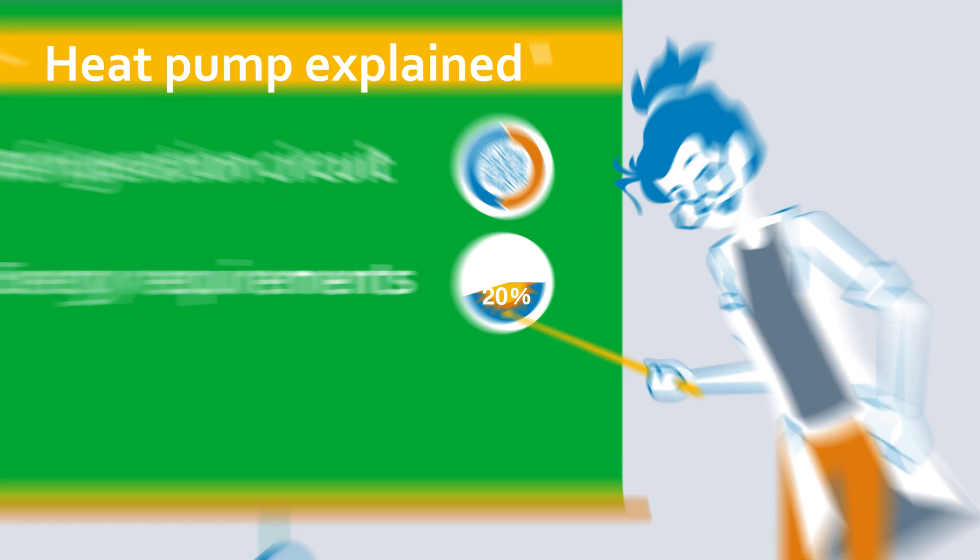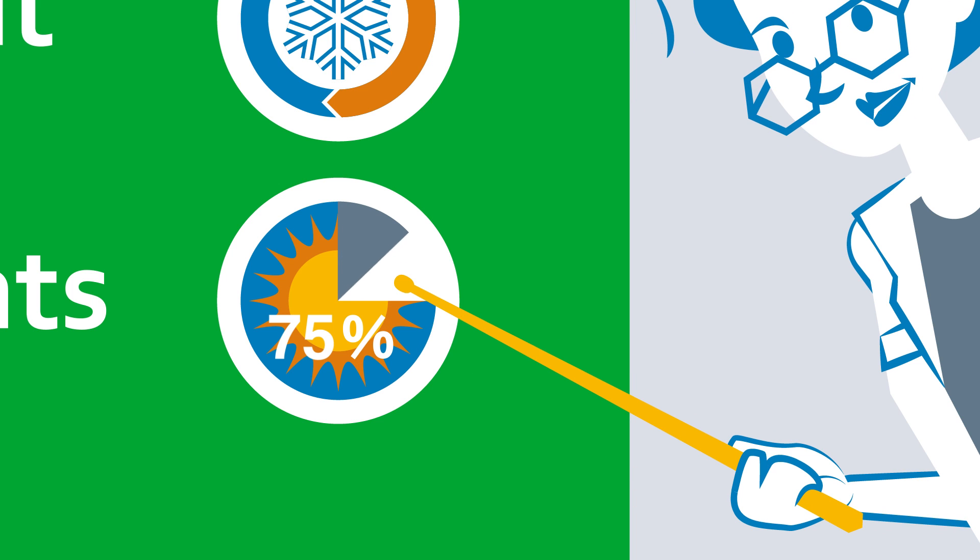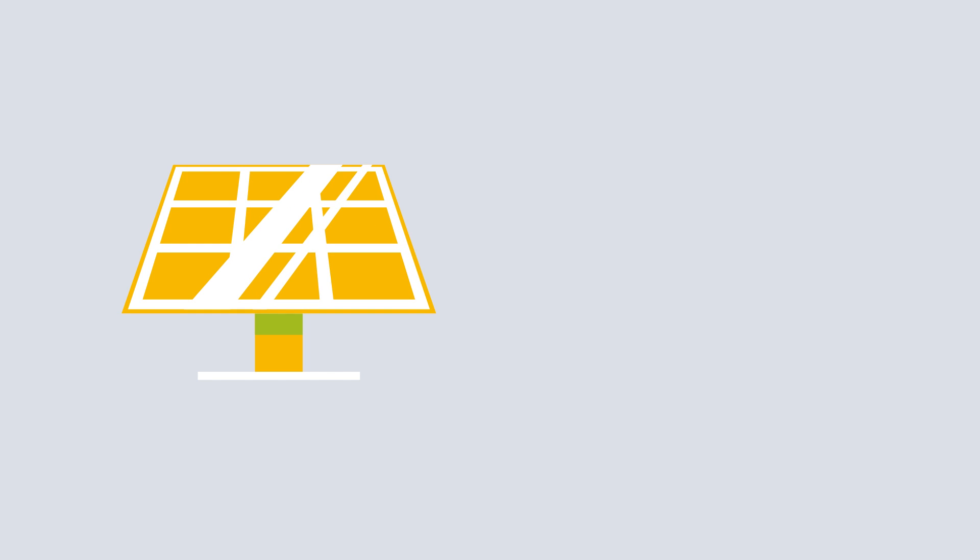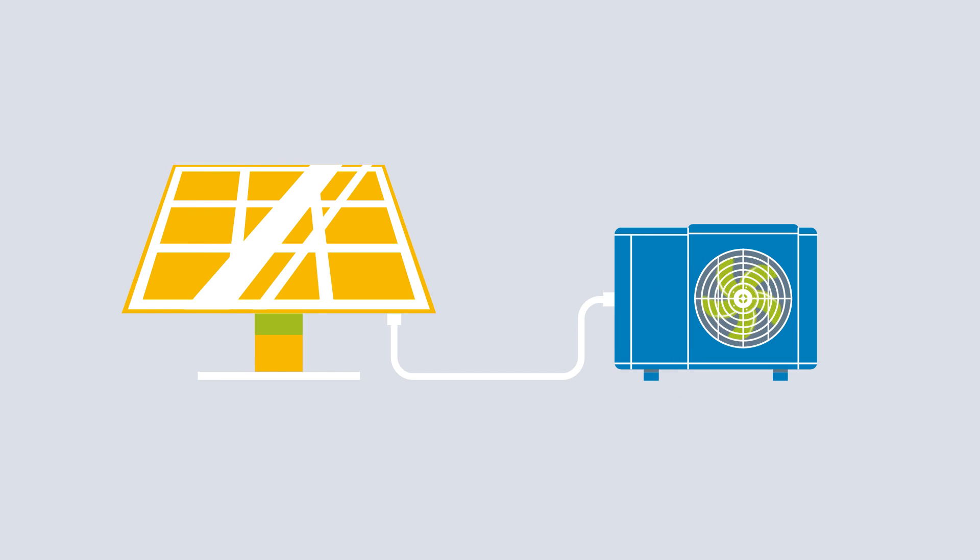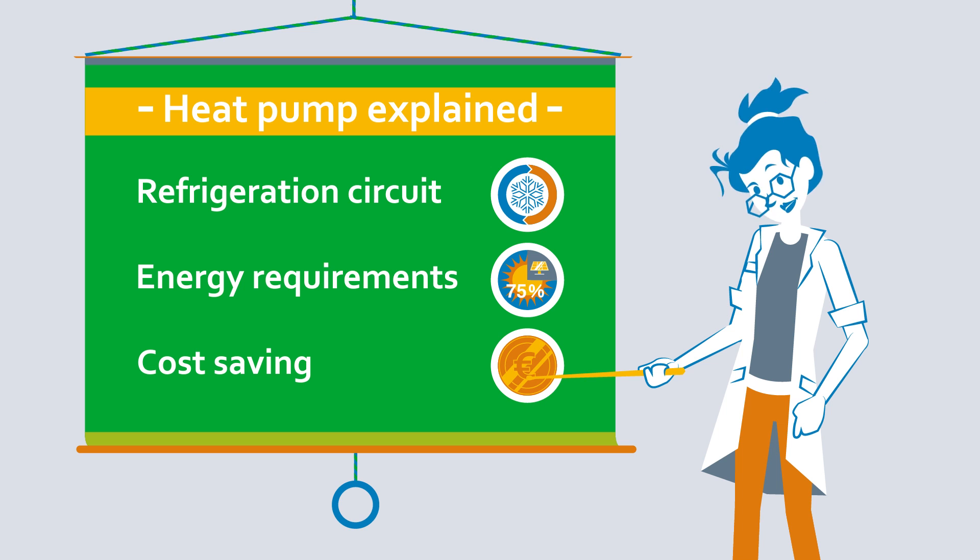Heat pumps extract about three-quarters of the required energy from the environment. In the best case, the remaining energy also comes from renewable energy sources. Systems consisting of a heat pump and photovoltaic system work largely independently of rising electricity prices and thus save on operating costs.